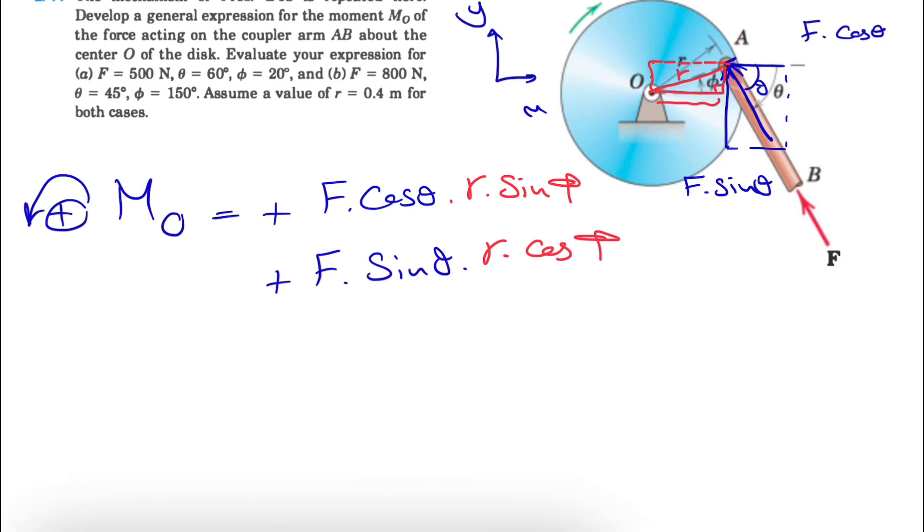And in the next part of this question, we just have to put our values for F, r, theta, and phi. So if you do that in part a, we have these values for F. So our F is 500.